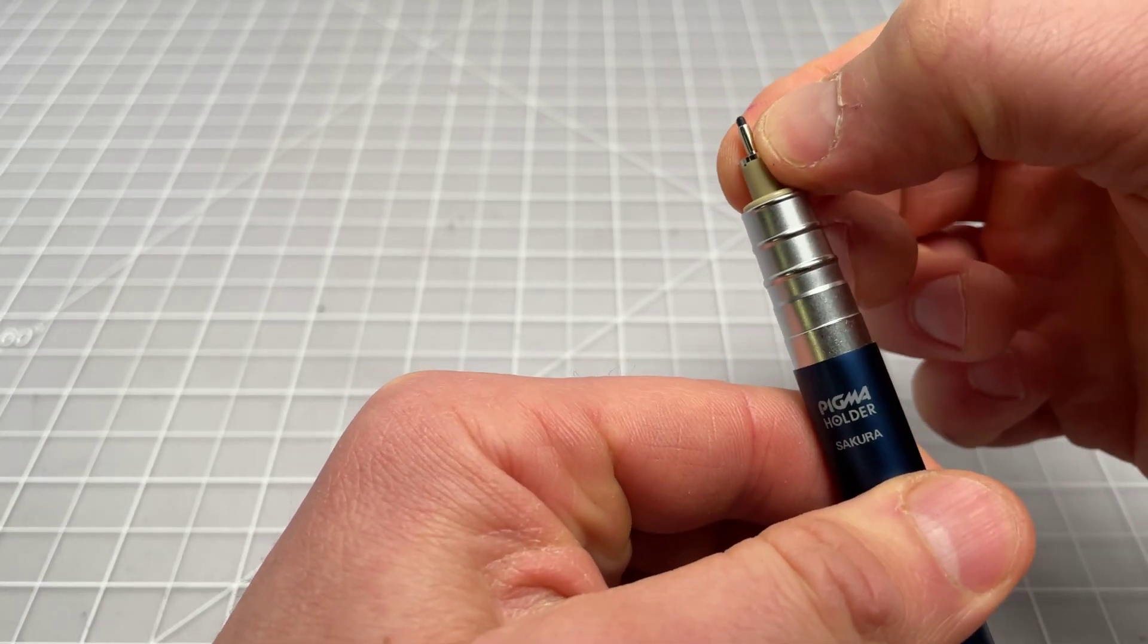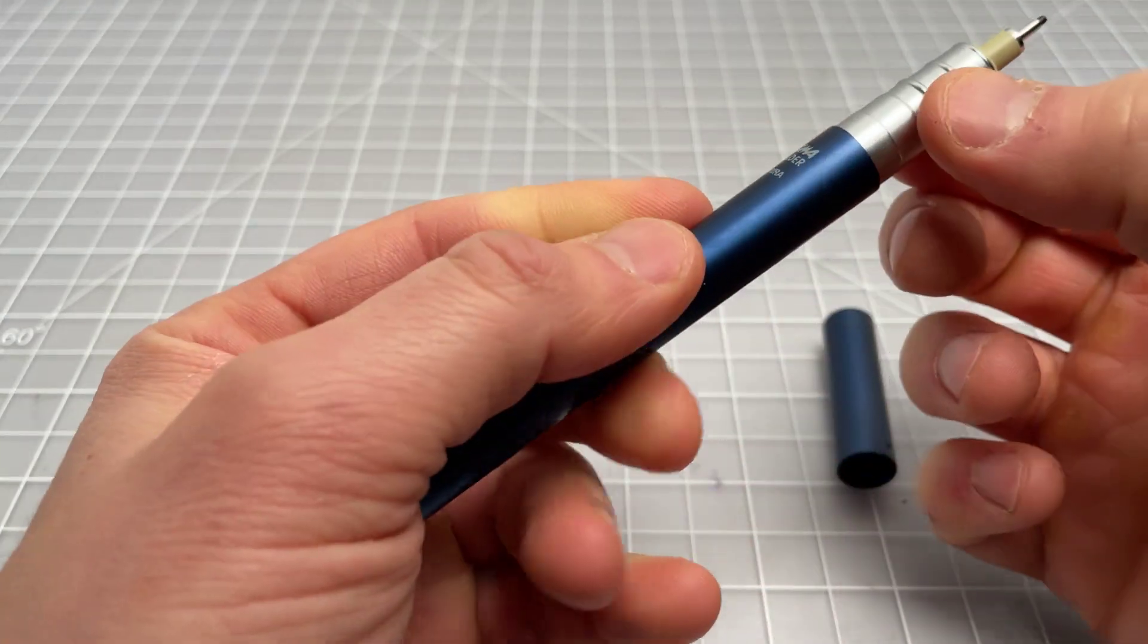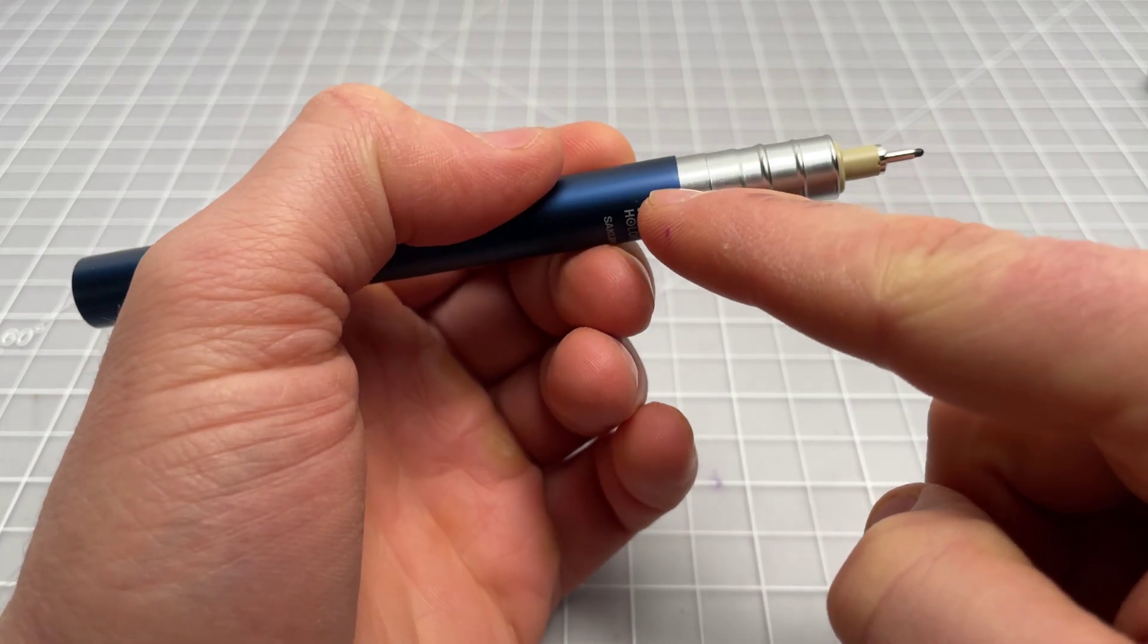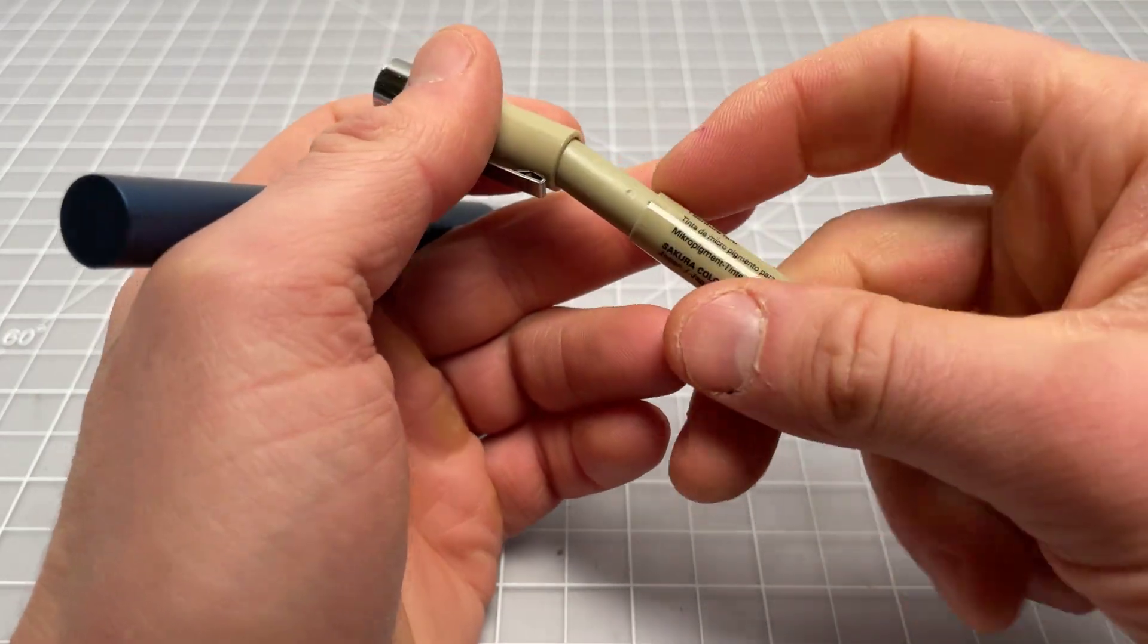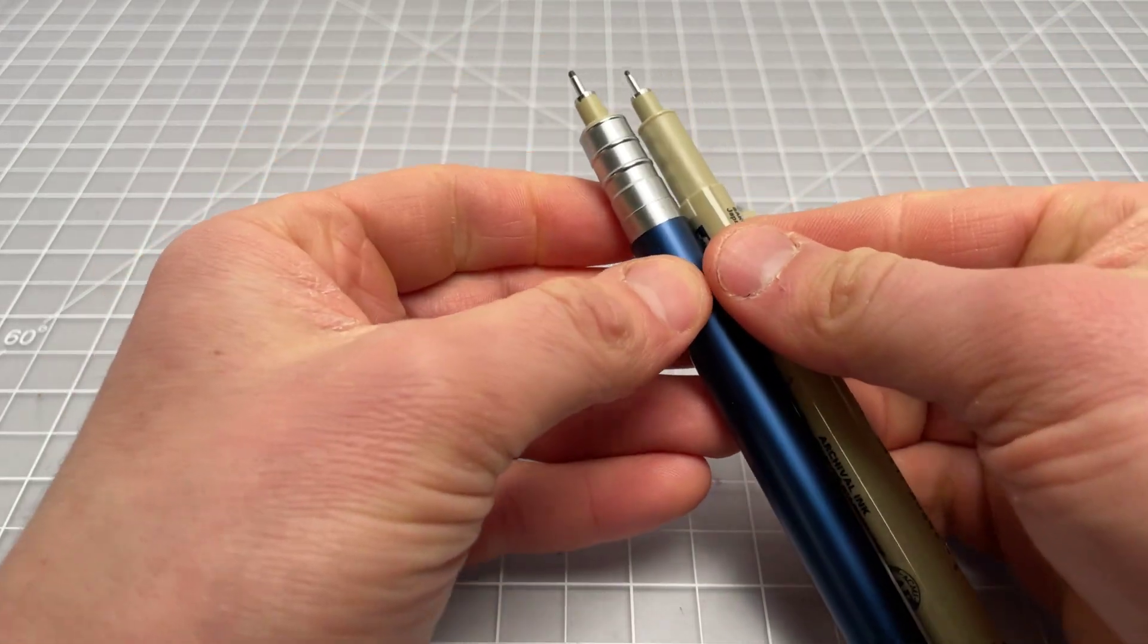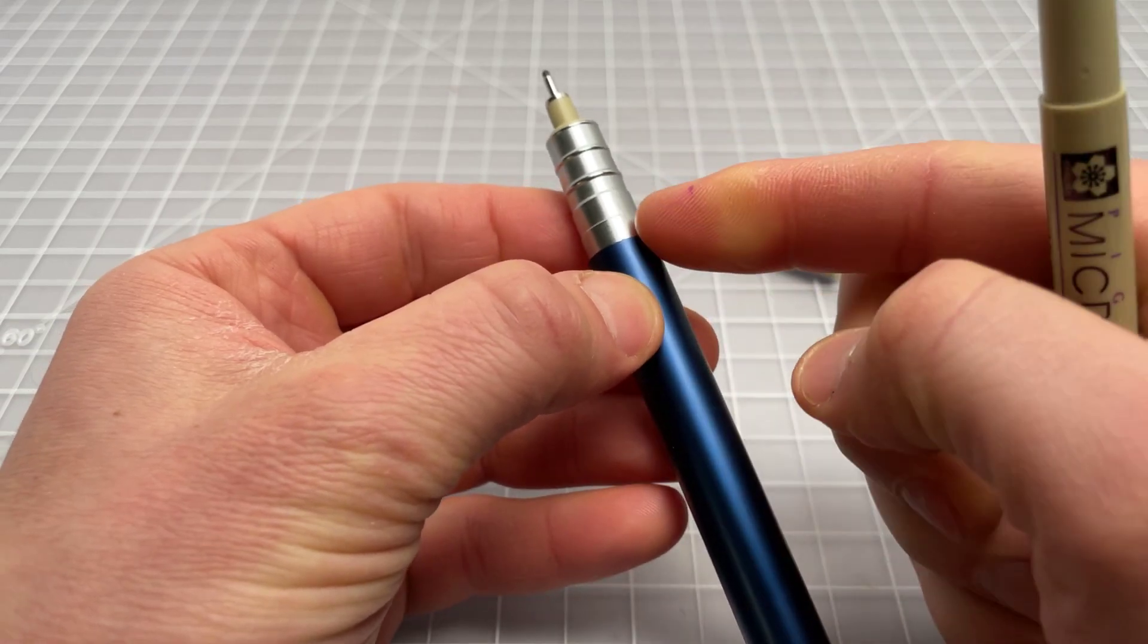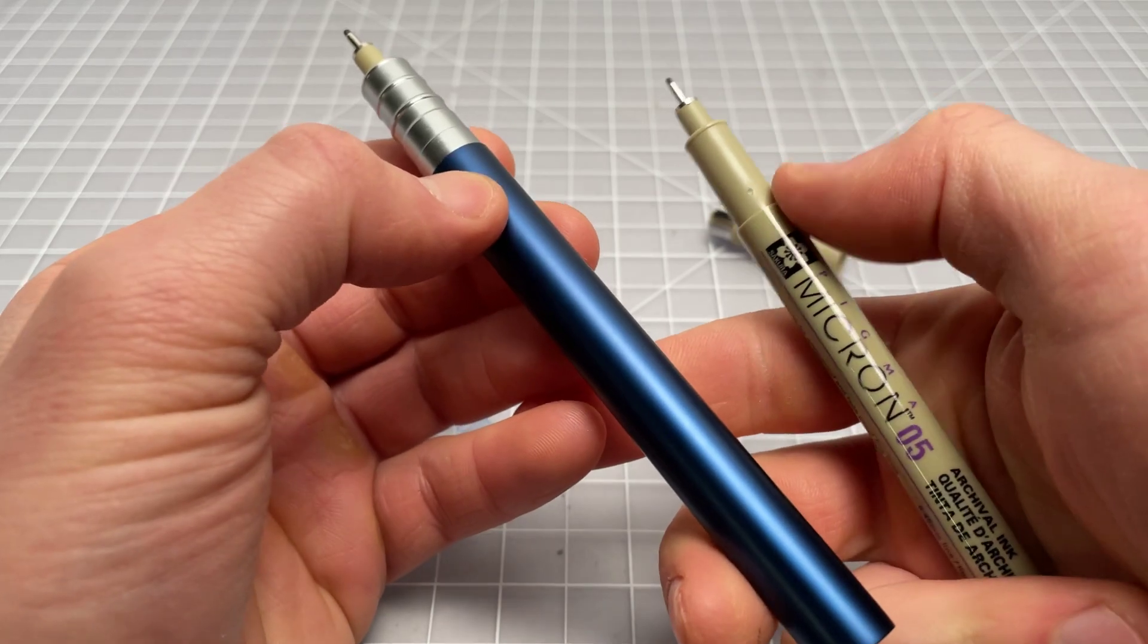Up here, there's almost no rattle. I can move it a little bit, but you can't feel it when you're writing. Now I have the Pigma holder. It's got a nice, comfortable metal section with these metal rings. I like it. Small step up here. That doesn't really bother me. I don't think that's going to bother anyone. If anything, it's better than it is here where there's much more of a step. The section is a good deal wider. So if you're looking for more width, I do find this to be more comfortable to hold than the plastic.